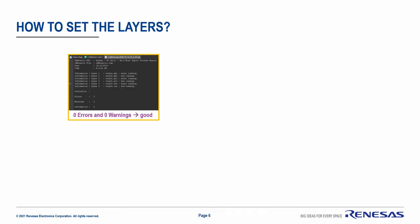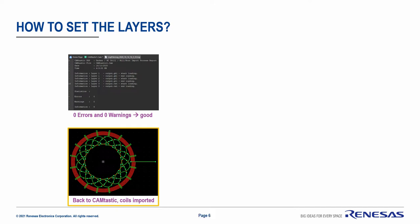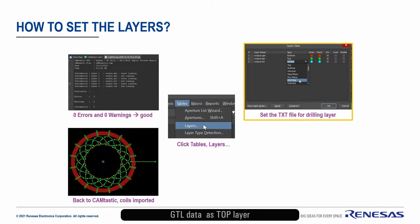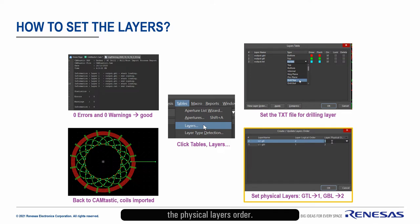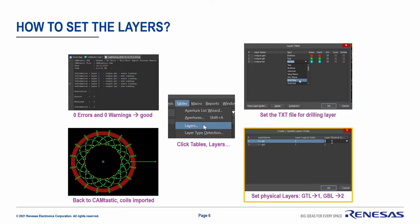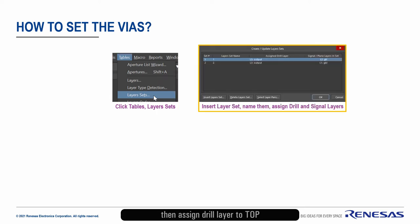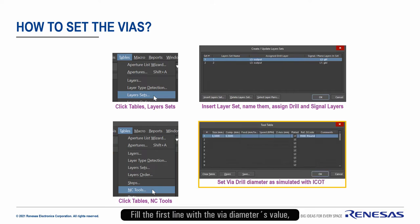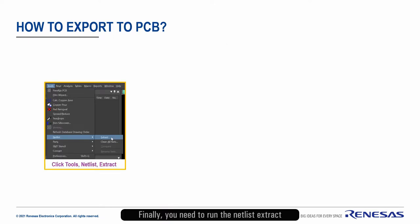Errors and warnings should be zero. You need to do some more steps before you can use the coils in your PCB. Select Layers in the Tables menu. Set the text data as Drill Top, GTL data as Top layer, and GBL data as Bottom layer. Press OK, then set the physical layers order: Top is 1 and Bottom is 2. Adjust Layer Sets in the Tables menu. Insert a new layer set, then assign Drill layer to Top and Bottom as well. Set NC Tools in the Tables menu. Fill the first line with the VIA Diameter's value, exactly as simulated with the Coil Optimization Tool. Finally, you need to run the Netlist Extract in the Tools menu.